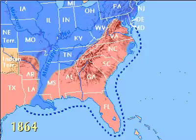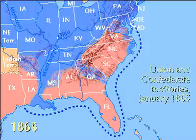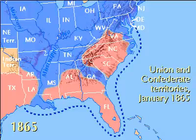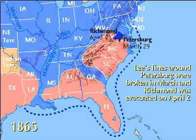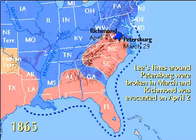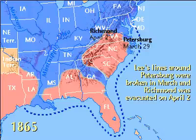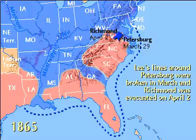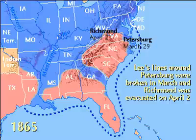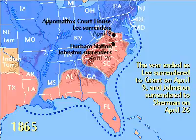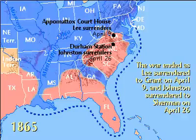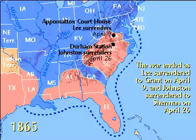With the beginning of 1865, the Union tide was overwhelming. Confederate lines around Petersburg were finally broken at the end of March. Lee evacuated Richmond, hoping to link with Johnston's forces in North Carolina, but he was surrounded at Appomattox and surrendered to Grant on April 9th. Johnston surrendered to Sherman on April 26th.